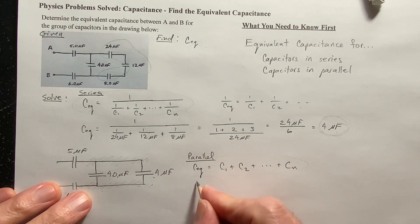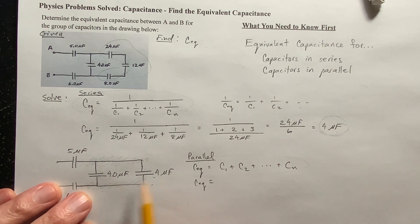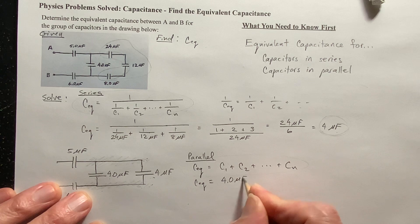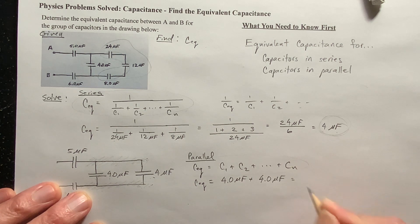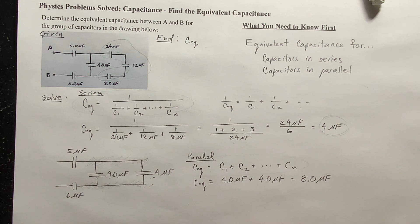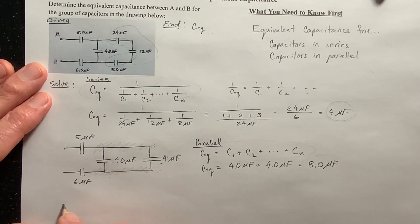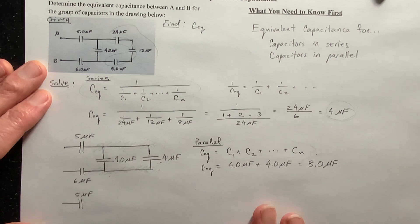But in this case, anyway, the equivalent capacitance of these two in parallel is just four microfarads plus four microfarads, which in most countries is eight microfarads. There you go. So now I'm going to replace these two with an eight microfarad capacitor and I'm going to redraw the circuit.